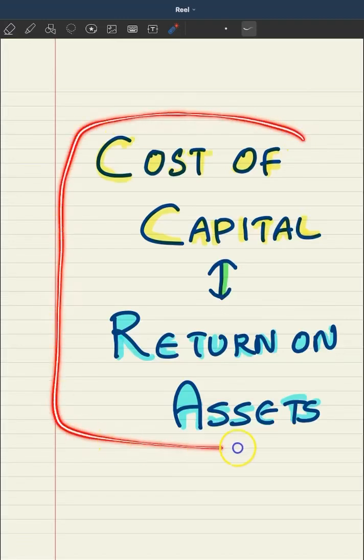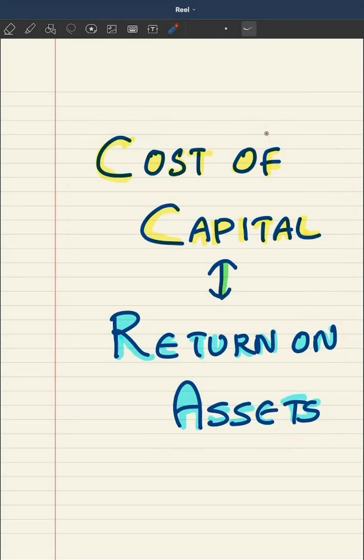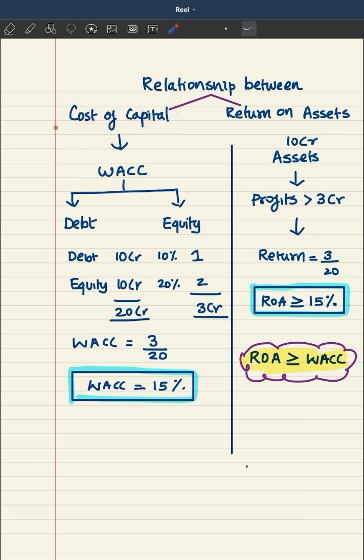What is the relationship between cost of capital and return on assets? There is a serious relationship. To understand this, let's first understand what cost of capital is. This is the cost of raising funds for the business. A business may raise funds from various sources, and each source has a cost. You calculate the overall cost of capital from all those sources.